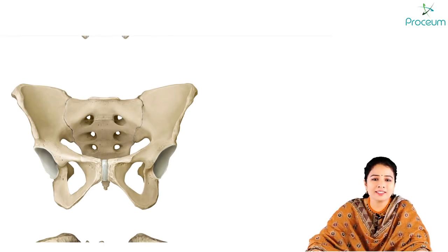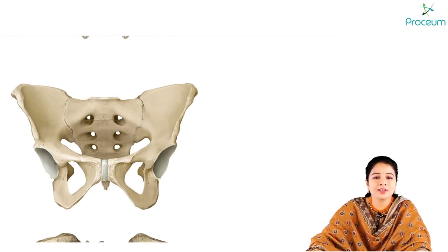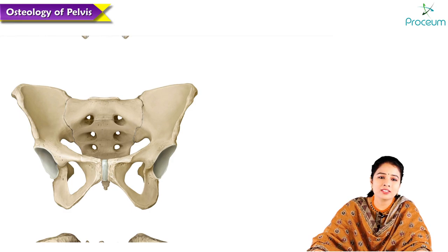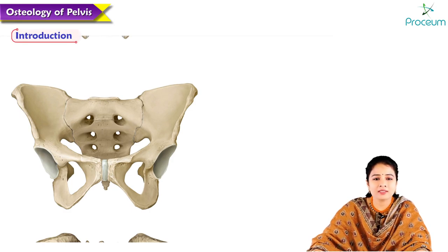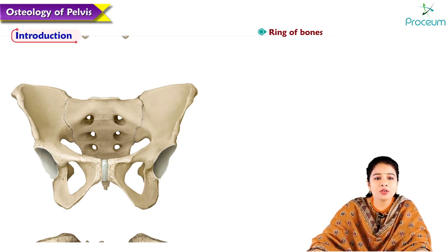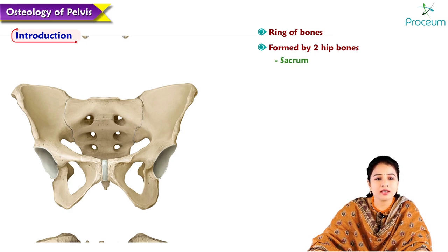Welcome to Osteology classes. Today's topic is the Osteology of Pelvis. The pelvis is the ring of bones formed by two hip bones, the sacrum, and coccyx.